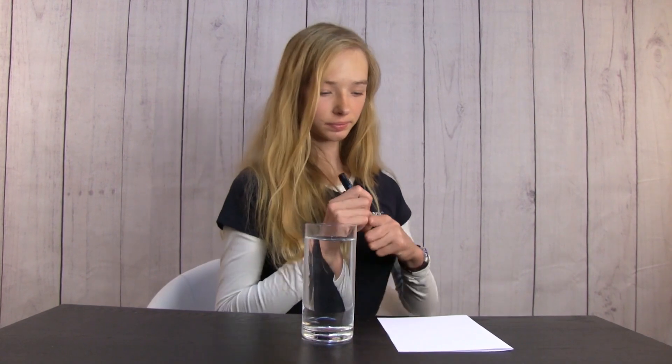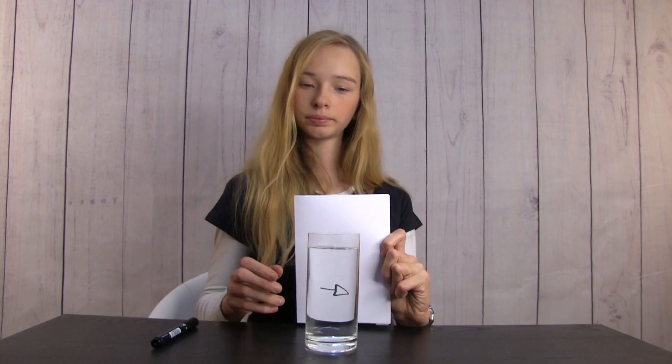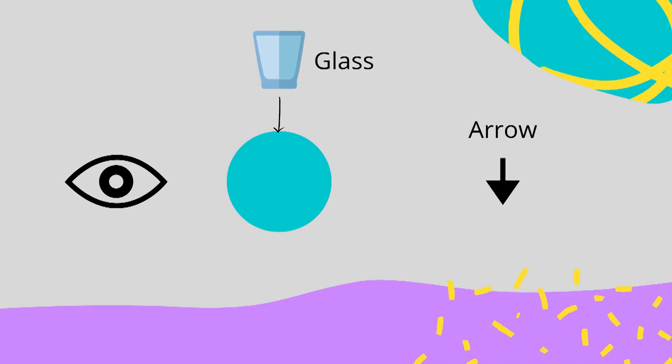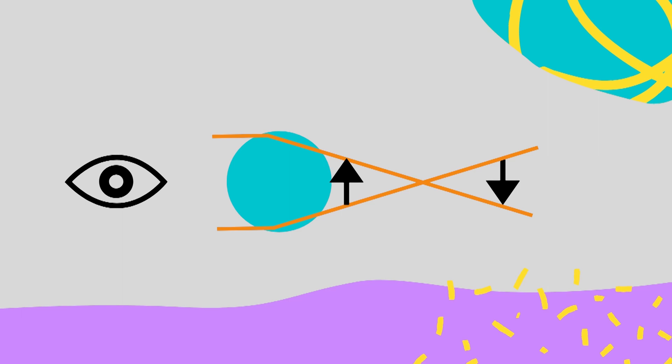I will draw an arrow. I will put the arrow behind the glass. Do you see where it is pointing? Are you sure? Look! So what makes the arrow flip? The glass of water is between your eyes and the arrow. The water in the glass bends the light. Where the light crosses is the focal point. The arrow is behind the focal point, and that is why we see the arrow flip.